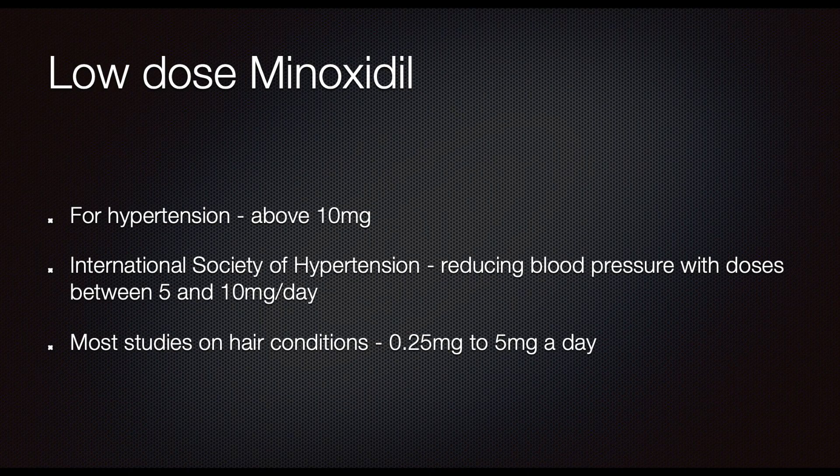We should define what low-dose oral minoxidil is. When used for hypertension, the dose was quite high — starting at 10 milligrams and going up to 40 milligrams. The International Society of Hypertension says the dose where it starts causing blood pressure reduction is somewhere between 5 and 10 milligrams. In the dermatological literature for hair loss, all studies used less than 5 milligrams — some starting as low as 0.25 milligrams. So the dosage we're looking at is 0.25 to 5 milligrams per day for oral minoxidil in hair loss conditions.